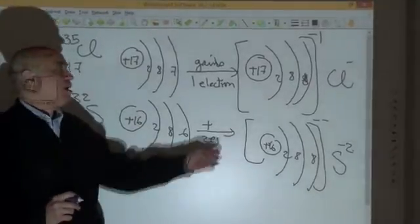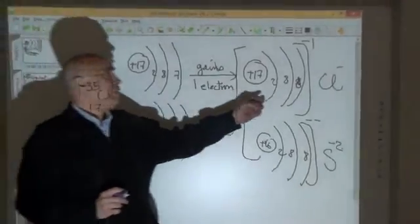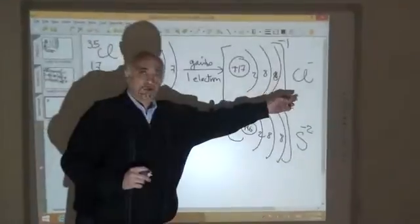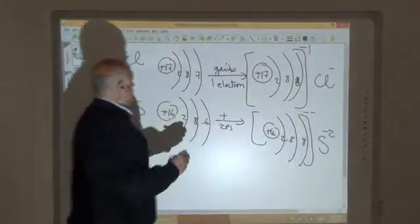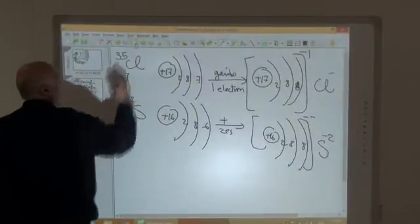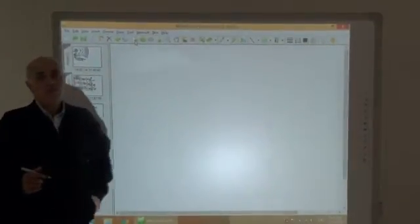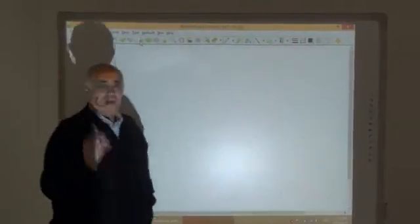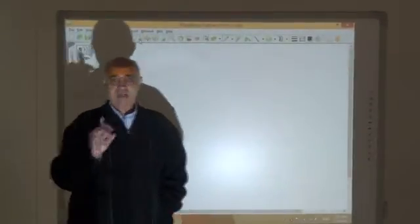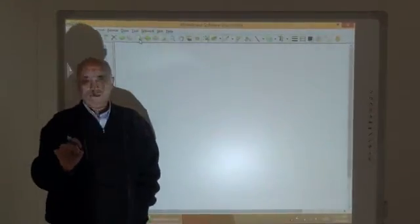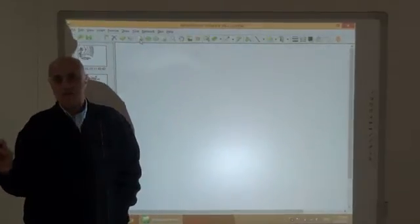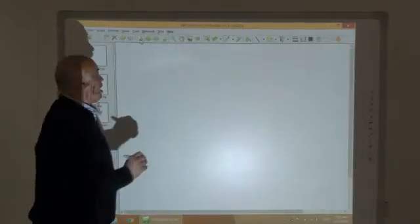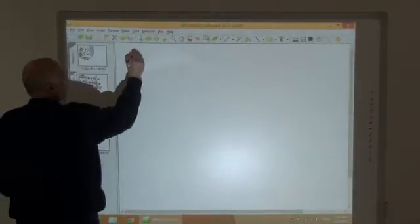Chlorine is monovalent, sulfur is divalent. The valency of an element is the number of electrons lost or gained when the atom reacts with another atom.